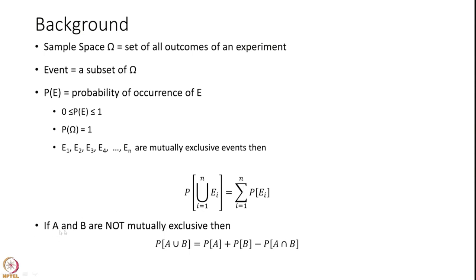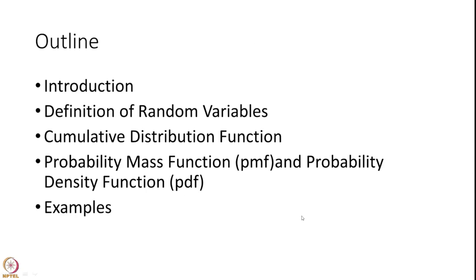It can also be derived that if A and B are not mutually exclusive events, then the probability of A union B can be written as probability of A plus probability of B. Please remember that we would have counted the common area twice because they are not mutually exclusive, so we have to subtract it once. I think this background you already have. Now let us move on.